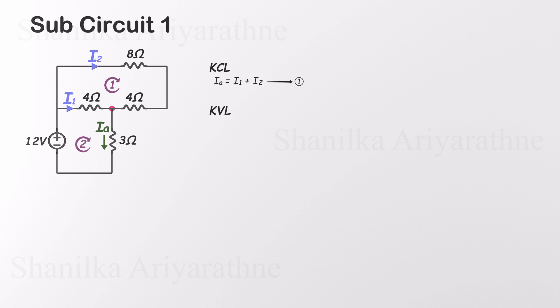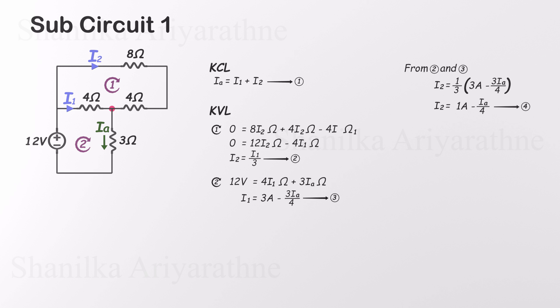There are two loops to work with. In loop 1, applying KVL gives us I2 equals I1 divided by 3. In loop 2, KVL gives us our third equation. Now we've got three equations. Let's solve them step by step. First, substitute equation 3 into equation 2. That gives us I2 in terms of IA. Then plug the expressions for I1 and I2 back into equation 1. After simplifying, we solve for IA and find that IA is 2 amps. That's the contribution from the 12-volt voltage source.